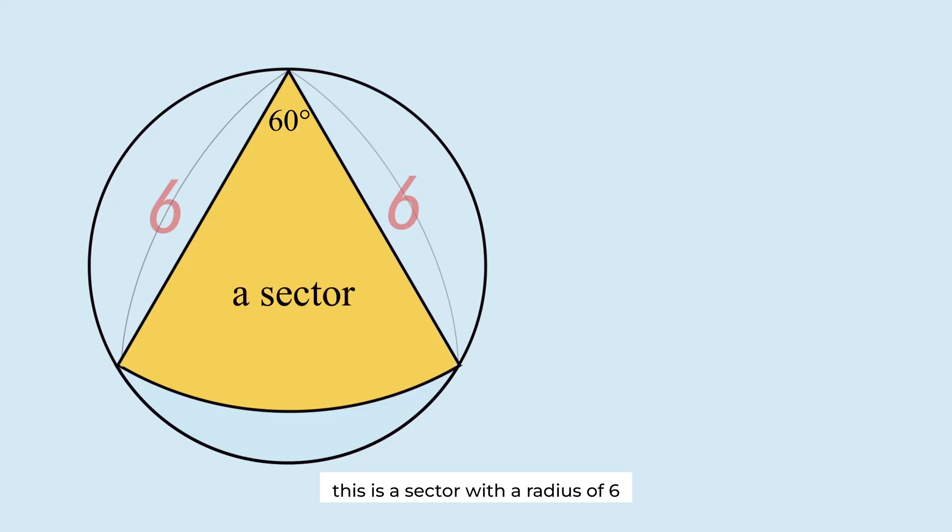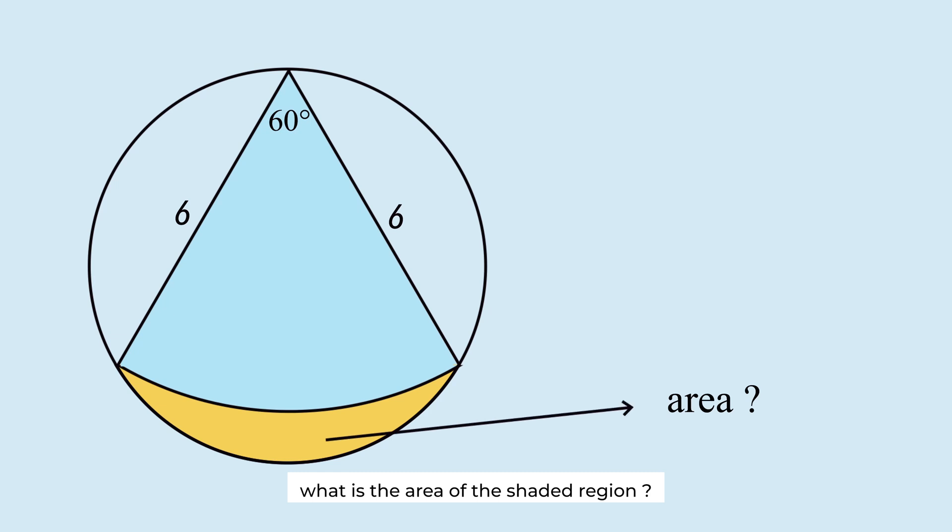This is a sector with a radius of 6 and a central angle of 60 degrees. It is inscribed in a circle. The radius of this circle is not given. What is the area of the shaded region?